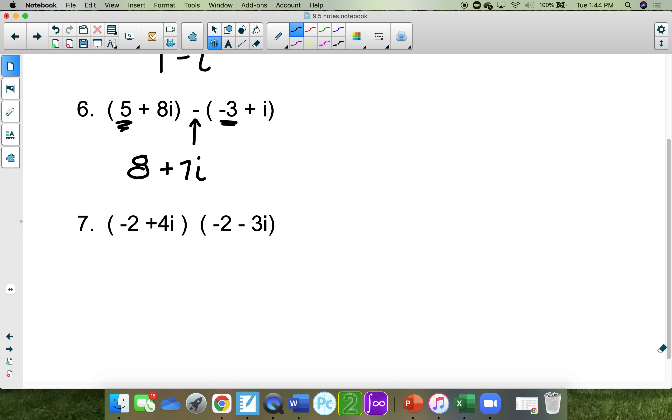And now multiplying. A negative 2 times a negative 2 is a positive 4, 4, a positive 6i, a negative 8i, and a negative 12i squared. But i squared is equal to a negative 1, so a negative 12 and a negative 1 makes a positive 12 plus 4 makes 16 minus 8i.